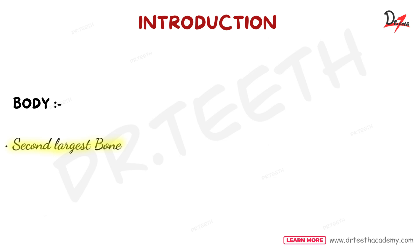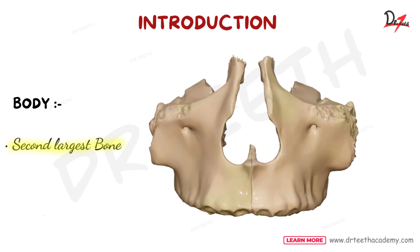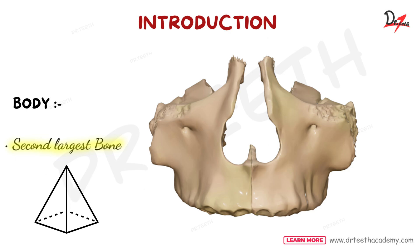Now when we talk about maxilla, its body is the largest part of it. The body of maxilla is somewhat pyramidal in shape and contains a large cavity that is called the maxillary sinus. It has four surfaces: anterior, posterior, superior and medial surface.